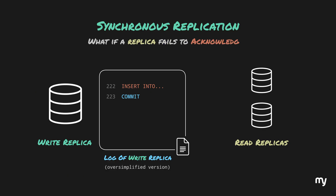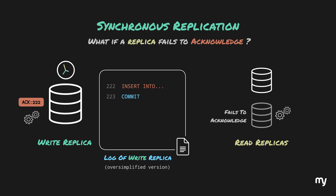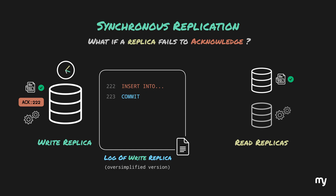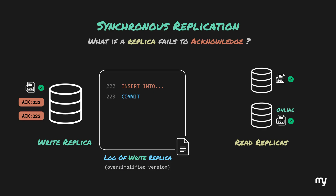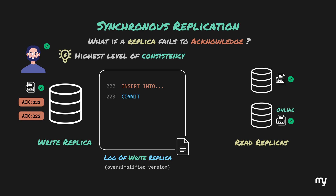But what happens if a replica fails to acknowledge? The primary will wait endlessly. Although the transaction will have been written to the primary and other available replicas, it will keep waiting on the replica that could not acknowledge. Once that replica comes back online, pulls the log, and acknowledges, the primary's wait will be over and it will return success to the client.